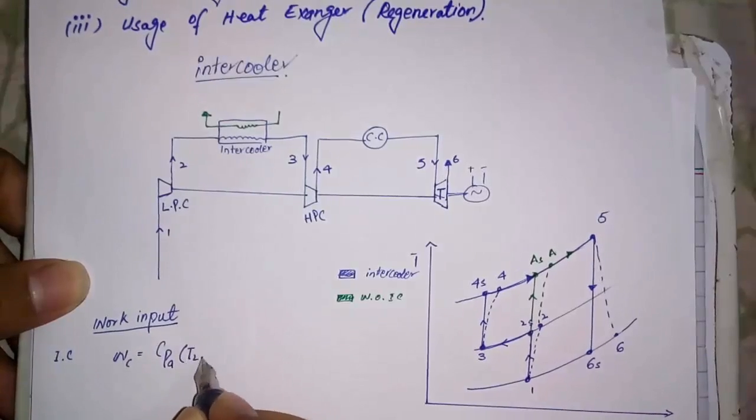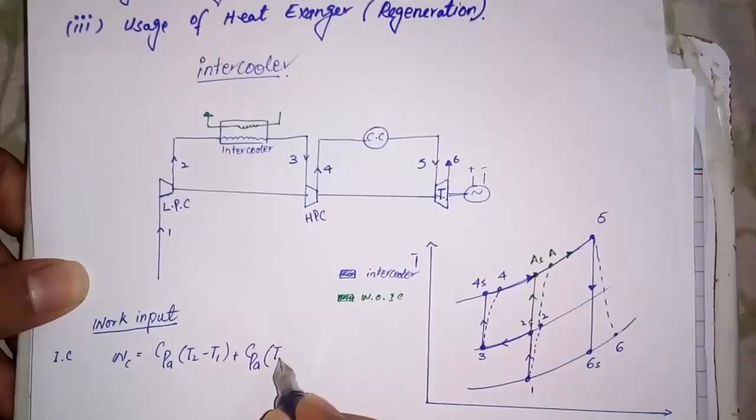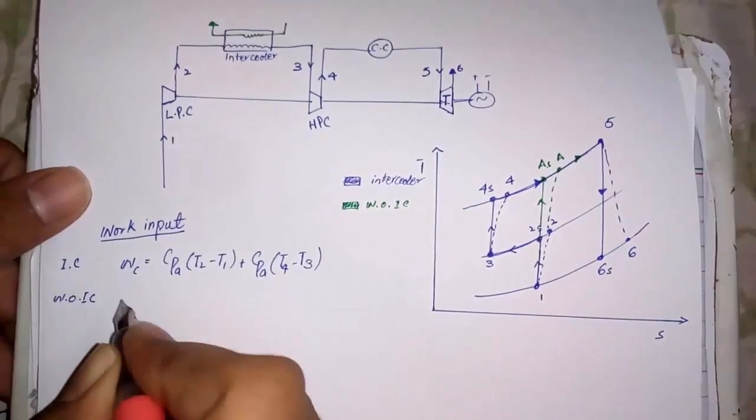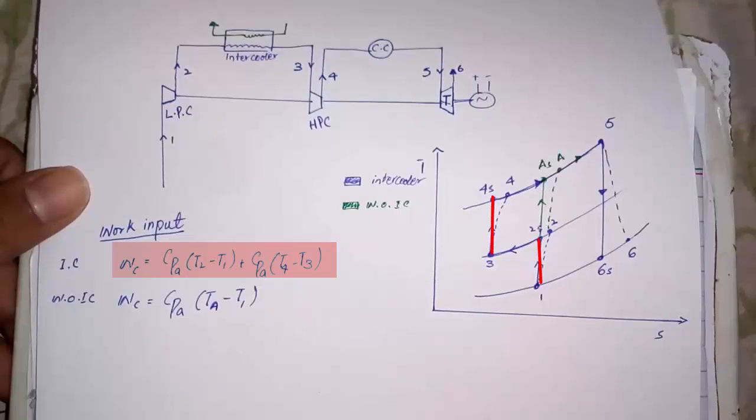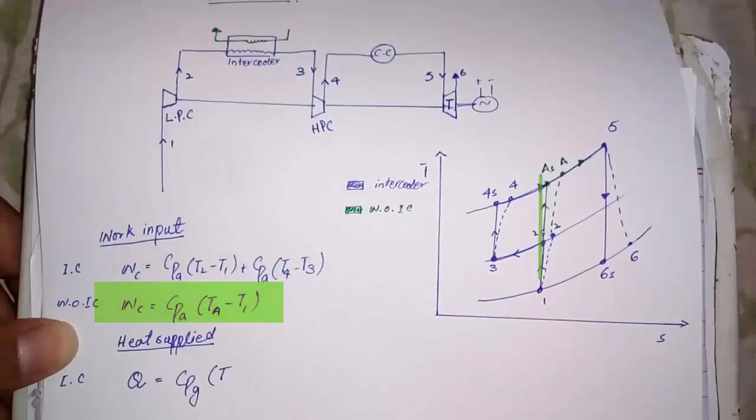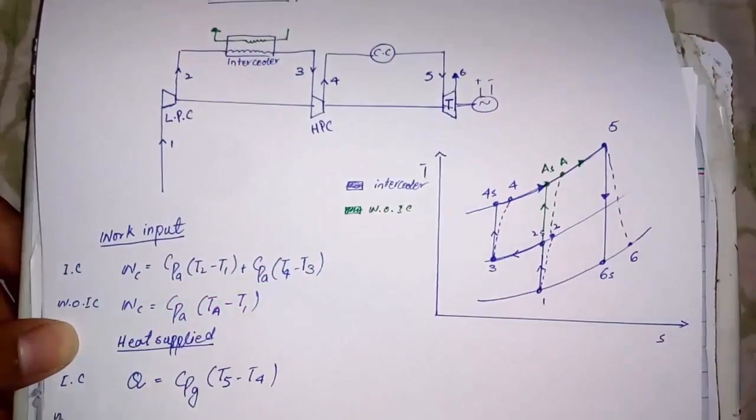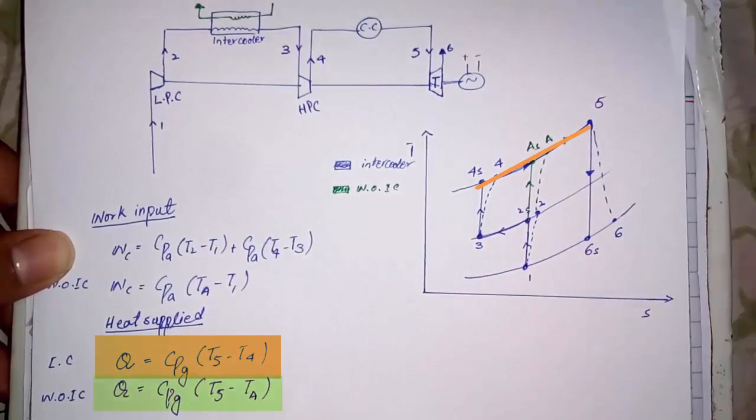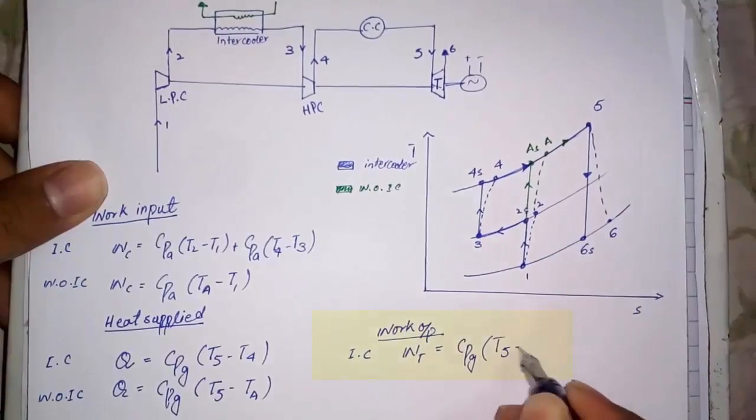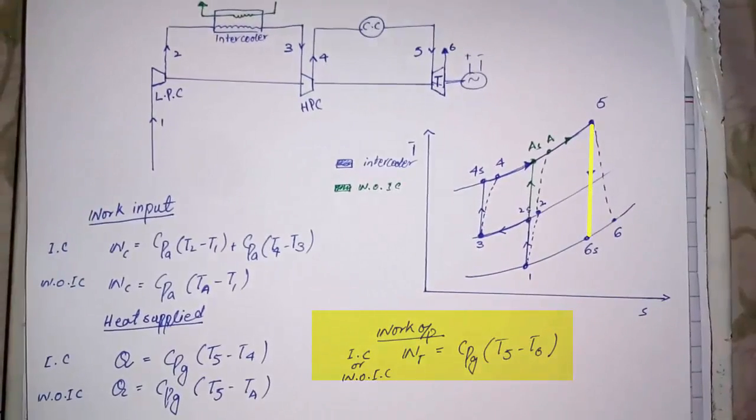In work input formula, we have to do less work on gas to compress when we are using intercooler as compared to the absence of it. In heat supplied formula, greater amount of heat is supplied in case of intercooler as compared to the absence of it. And the work output amount is same in both cases.